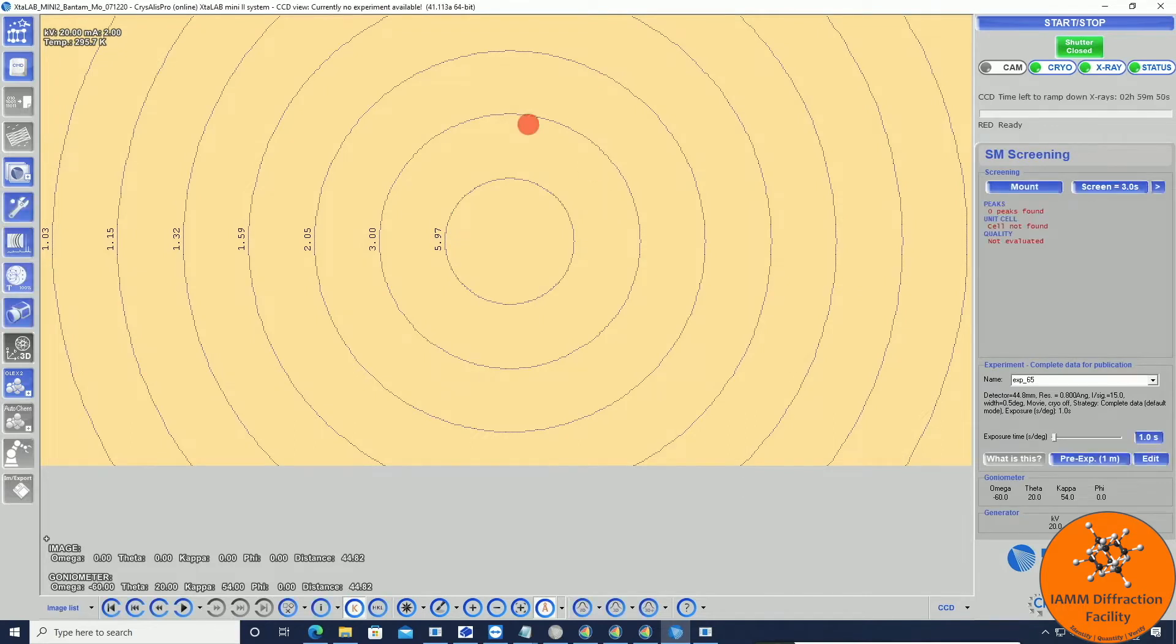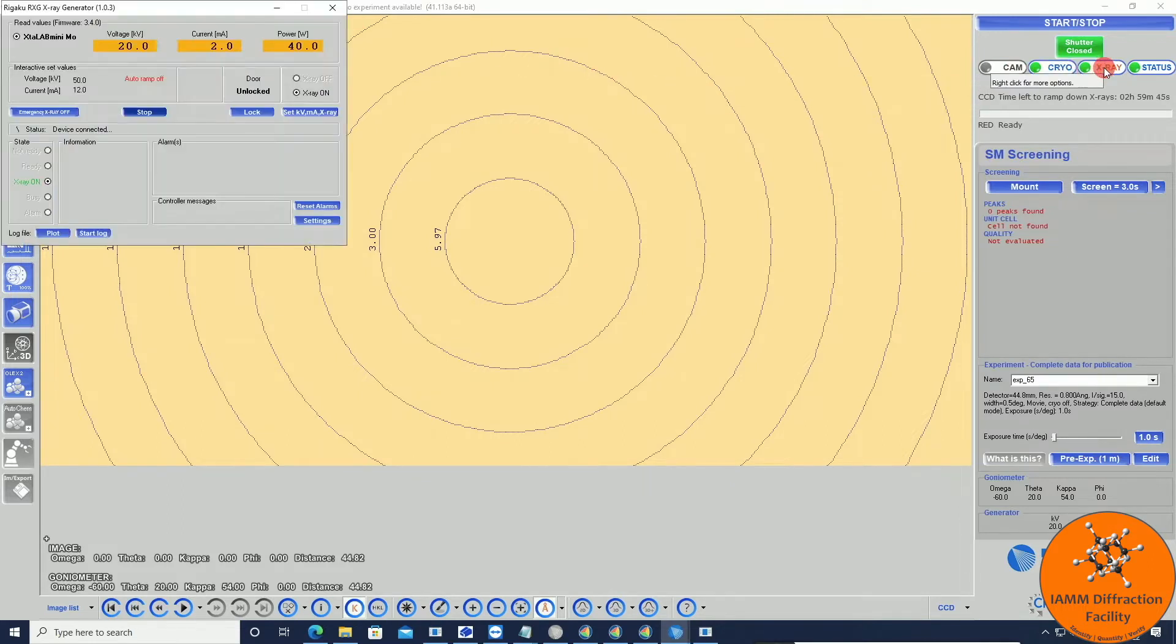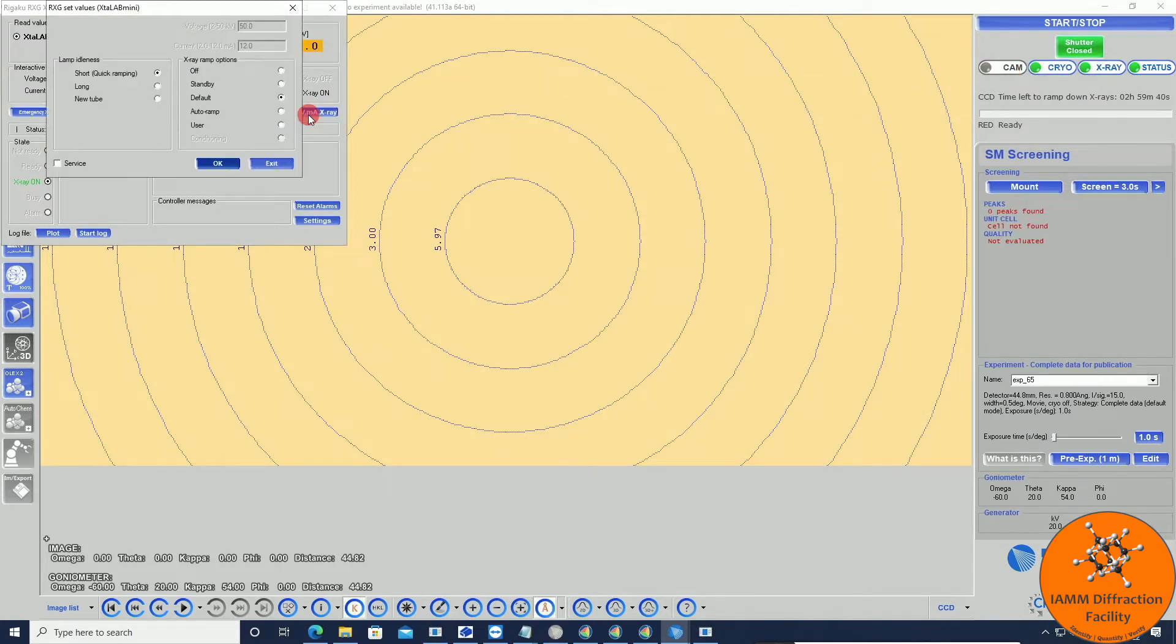If you need to turn up the x-rays, we see that they are currently 20 and 2. Those are the standby settings. We can come over here to x-ray, set kV-mA, choose default, and OK.